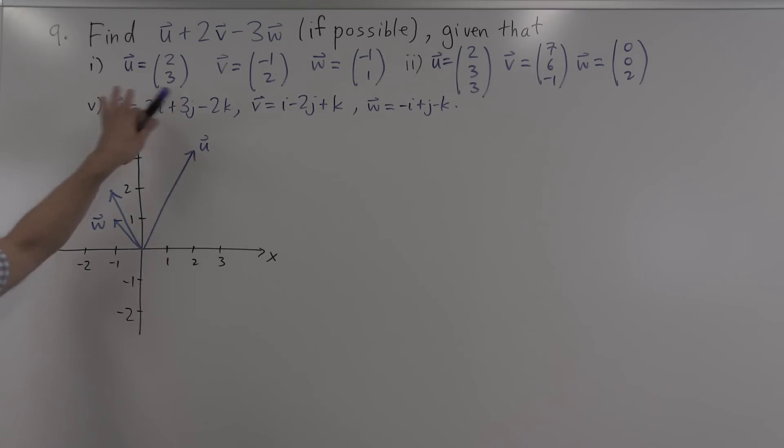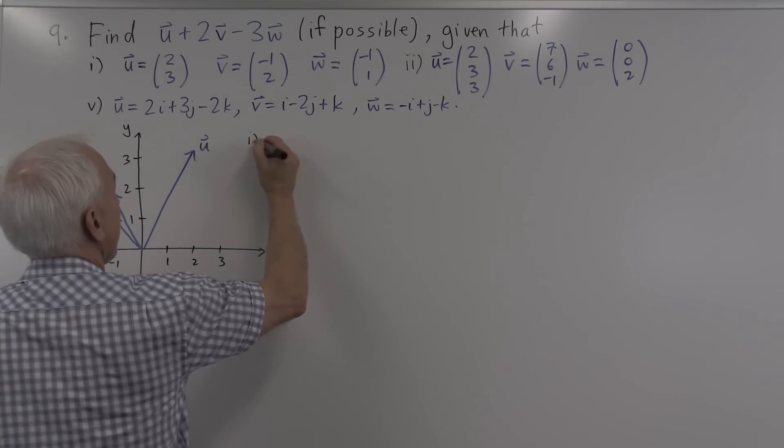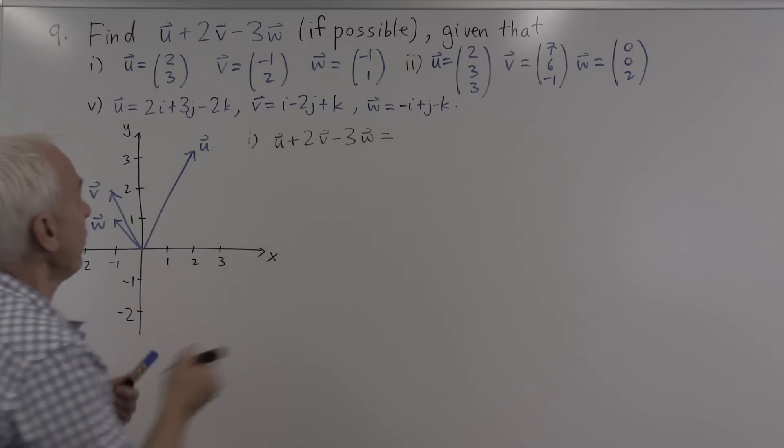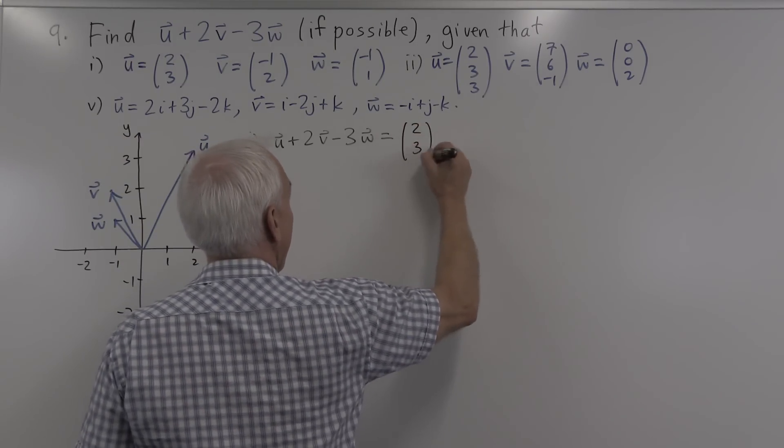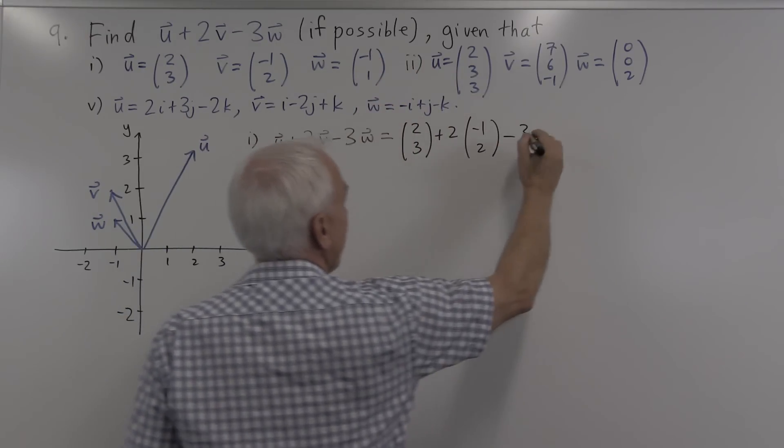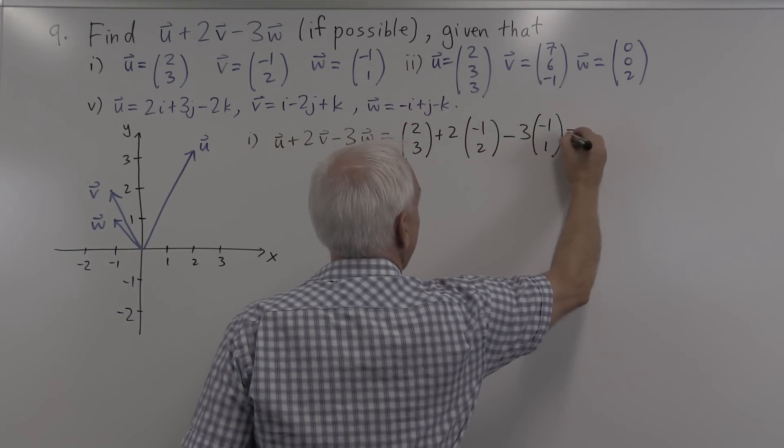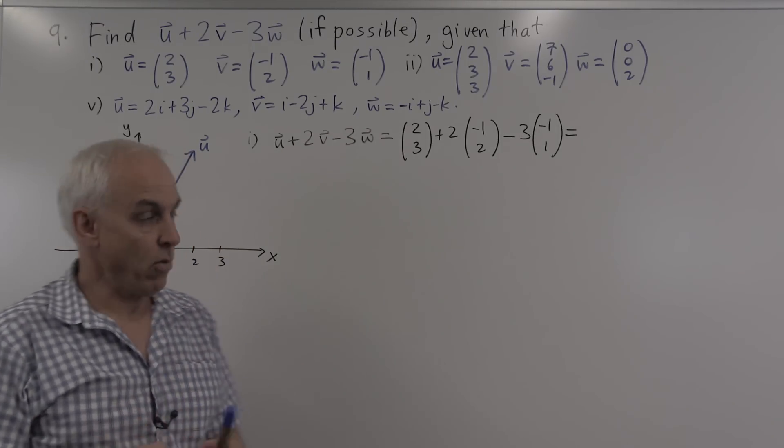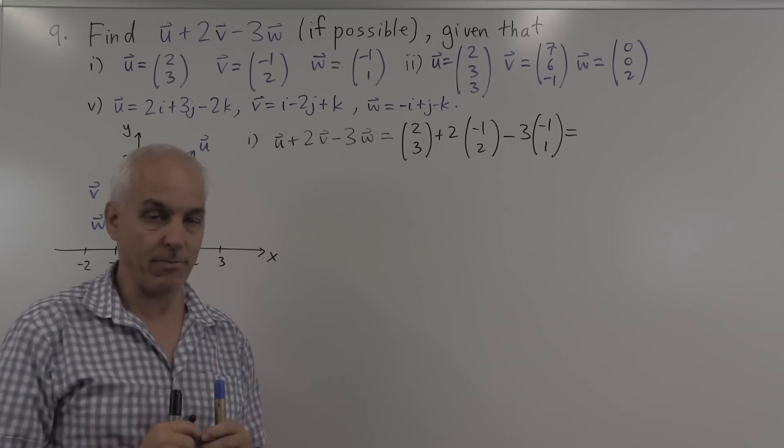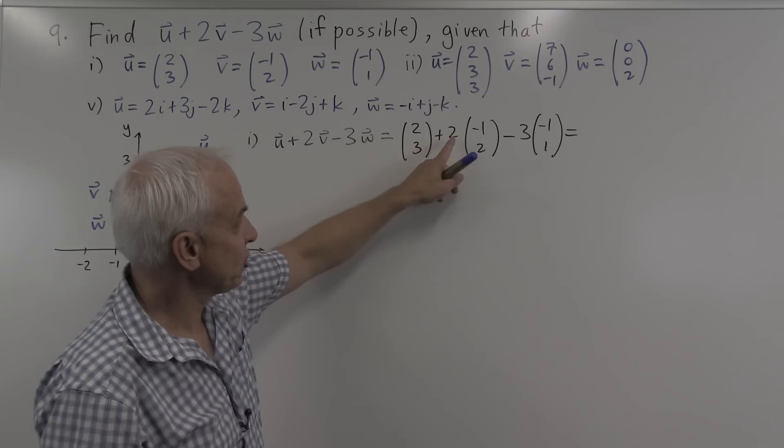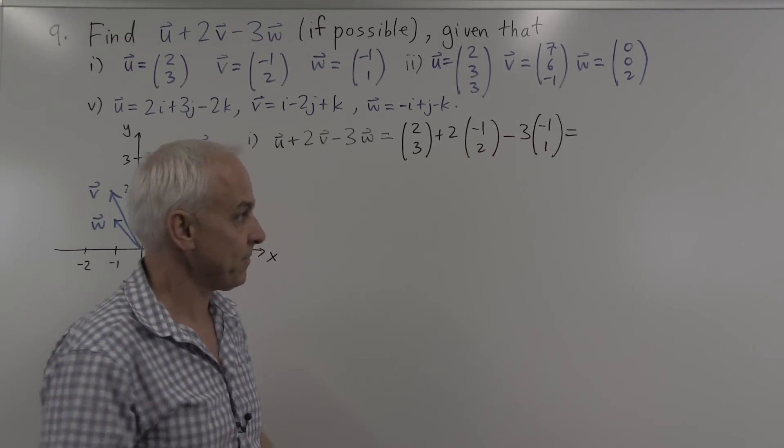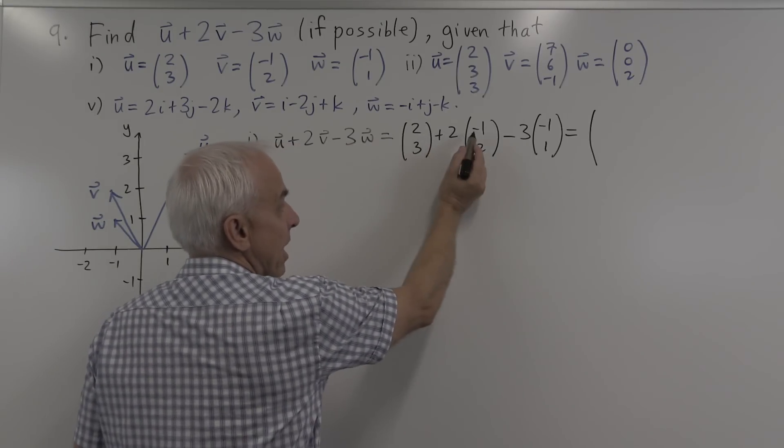Okay, so let's first work out this expression, u plus 2v minus 3w directly. So u is (2,3), and we're asked to take 2 times v, which is (-1,2), and then subtract 3 times w, which is (-1,1). And how do we do a linear combination like this? Well, we do everything component-wise. We just look at the first components separately and the second components separately. So the first component, there's a 2 here, a plus 2 times minus 1 for a total of minus 2, and a minus 3 times minus 1 for a total of plus 3. So altogether, that first component has 2 minus 2 plus 3, which is altogether 3.